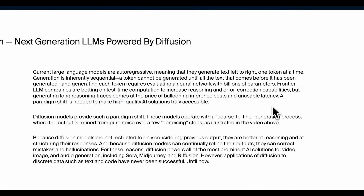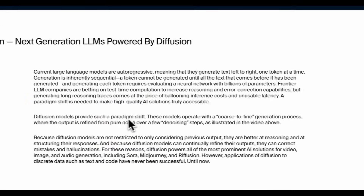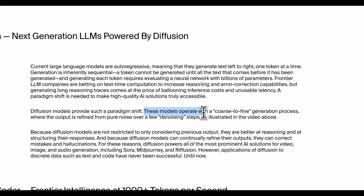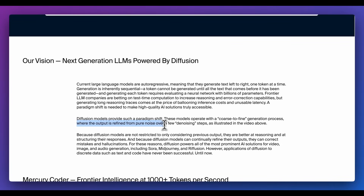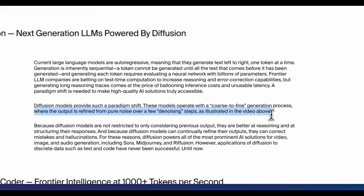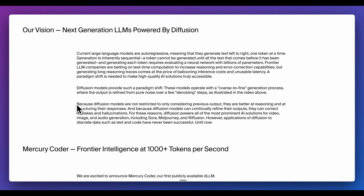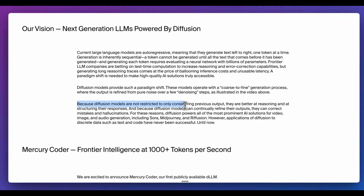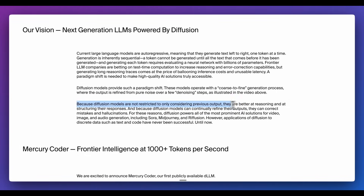A paradigm shift is needed to make high-quality AI solutions truly accessible. As they describe, diffusion models provide that paradigm shift — these models operate with a coarse-to-fine generation process where the output is refined from pure noise over a few denoising steps. Because diffusion models are not restricted to only considering previous output, they are better at reasoning and structuring their responses, and because they can continually refine their output, they can correct mistakes and hallucinations.